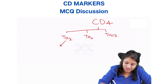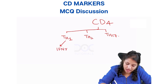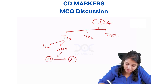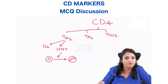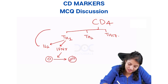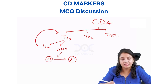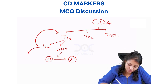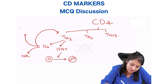These T helper 1 cells are the ones which release interferon gamma and interleukin 2. When they release interferon gamma, this converts macrophages into epithelioid cells, which have slipper-shaped nuclei and they help in forming the granuloma. This interleukin 2 will act as a paracrine loop and keep on stimulating Th1. Also, this interleukin 2 will go and activate NK cells and also T regulatory cells.